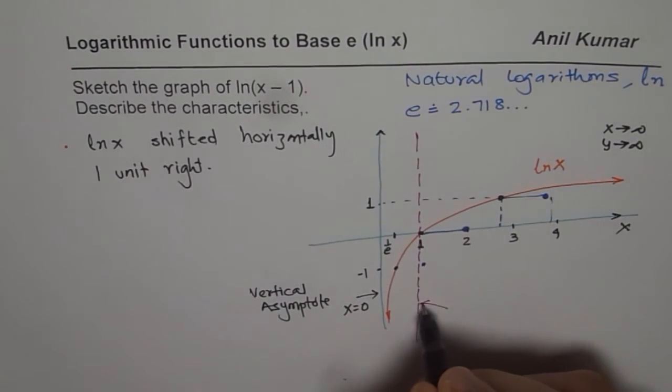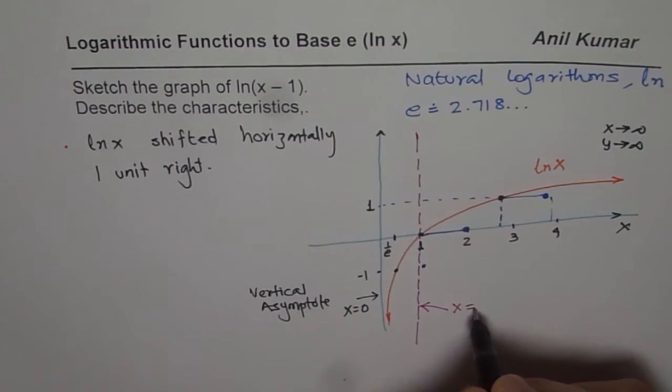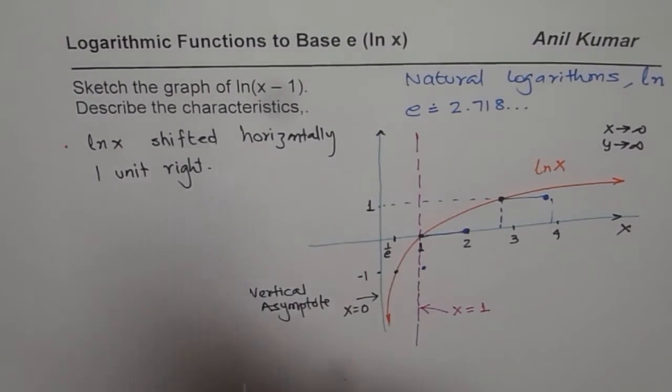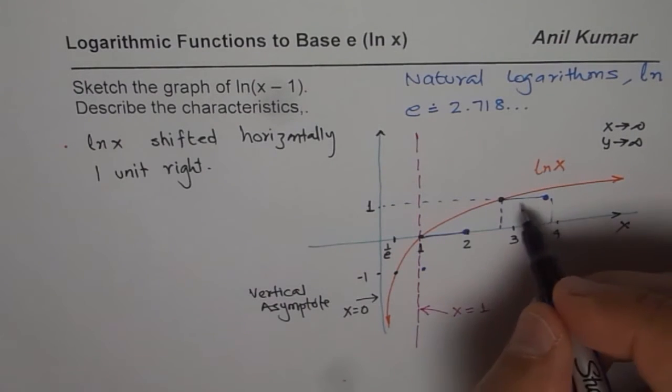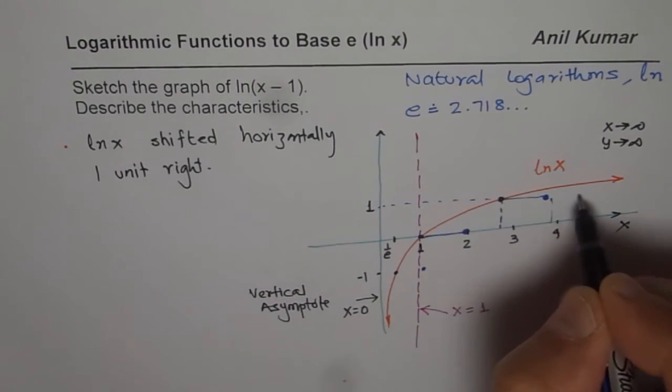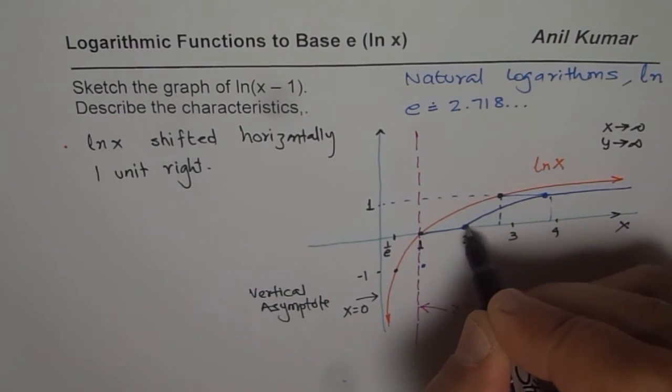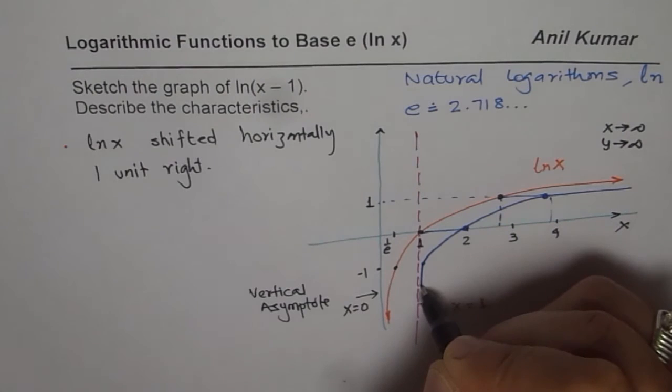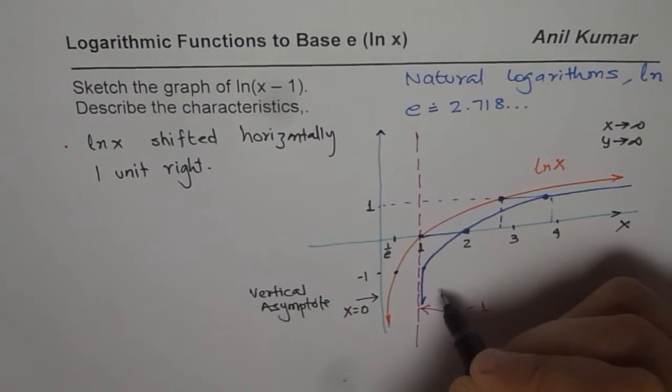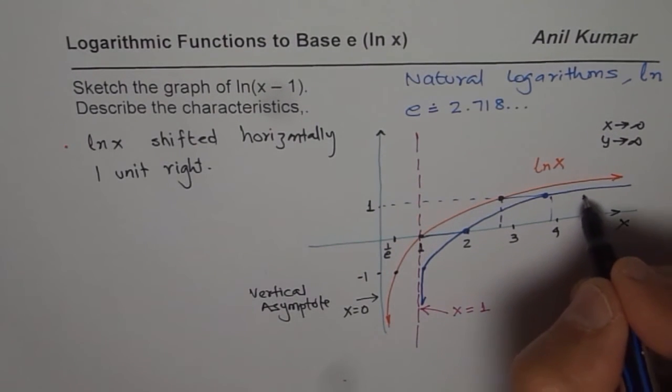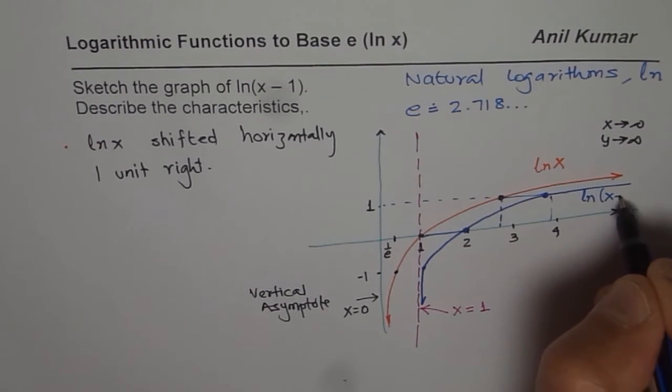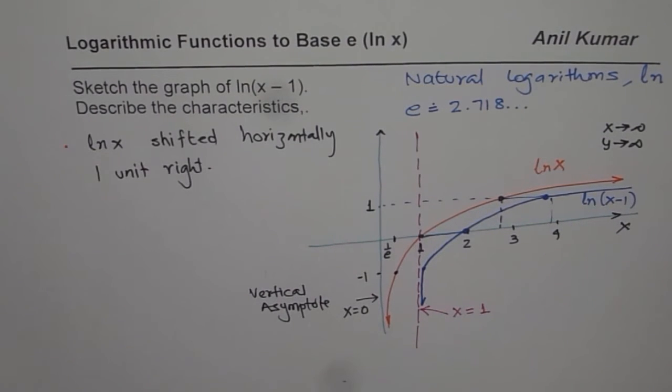We'll have a vertical asymptote shifted to 1. Since it has shifted 1 unit to the right, we'll have a vertical asymptote at x equals 1, and we can connect the other points to draw the graph. So we have this graph which is shifted right. Approximately like this will be our function ln(x-1). You get the idea.